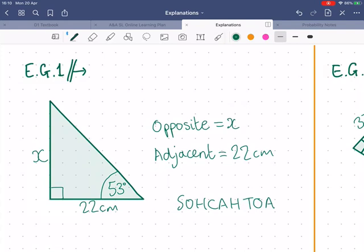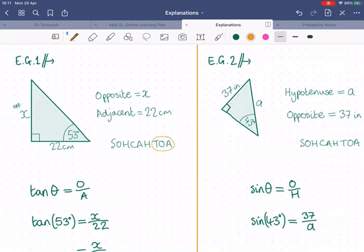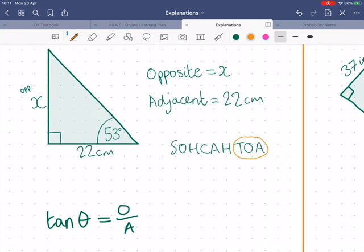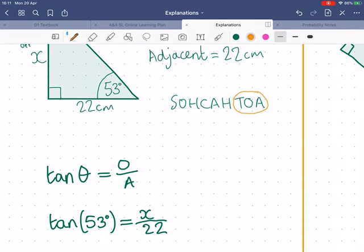So adjacent in this triangle equals 22 centimeters. We've got an unknown opposite. The first step in these questions is always to label the sides, basically, find out what we're working with here. So we're working with opposite and adjacent. Now, which one of these in SOHCAHTOA are we looking at? The third one, tan. So tan of the angle equals opposite over adjacent. So we can fill in everything we know, and that will give us tan of 53 equals x over 22.